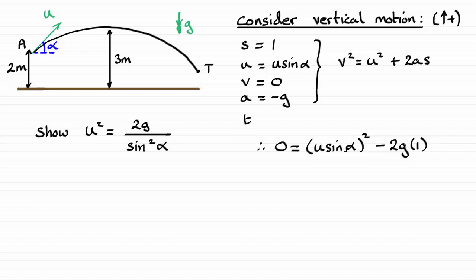So, can you see this is starting to shape up to what we have over here? I can see that if I add 2g to both sides, square out the bracket, I'm going to have u squared sin squared alpha is equal to 2g. And then simply divide by the sin squared alpha to both sides. We end up with u squared equaling the 2g then all over sin squared alpha. And there you have it.